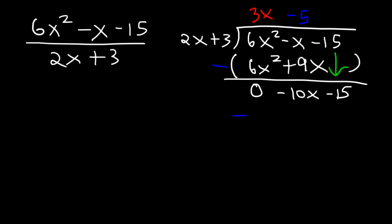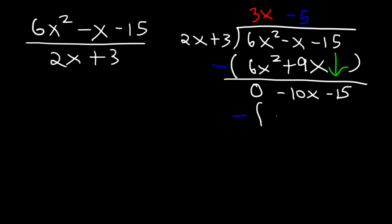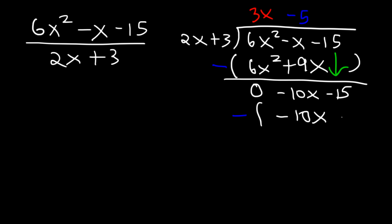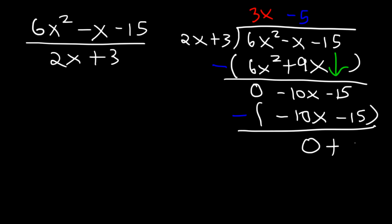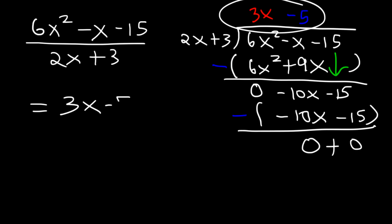Put the subtraction sign and multiply: negative 5 times 2x is negative 10x, and negative 5 times 3 is negative 15. Subtract: negative 10x minus negative 10x is 0, and negative 15 minus negative 15 is also 0. The remainder is 0, so the answer is 3x minus 5.